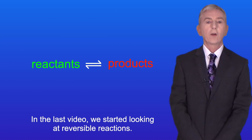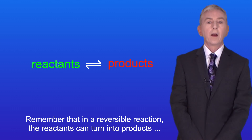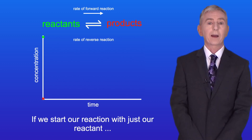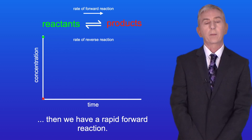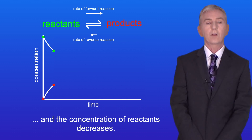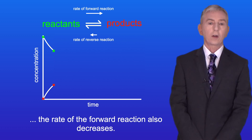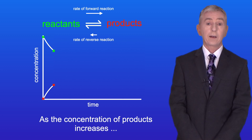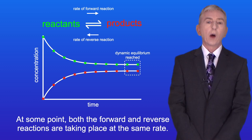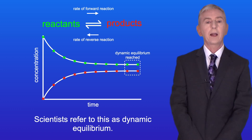In the last video we started looking at reversible reactions. Remember that in a reversible reaction the reactants can turn into products and the products can then turn back into the reactants. If we start our reaction with just our reactants then we've got a rapid forward reaction. This means that the concentration of products increases and the concentration of reactants decreases. As the concentration of the reactants decreases, the rate of the forward reaction also decreases, and as the concentration of products increases the rate of the reverse reaction also increases. At some point both the forward and reverse reactions are taking place at the same rate — scientists refer to this as dynamic equilibrium.